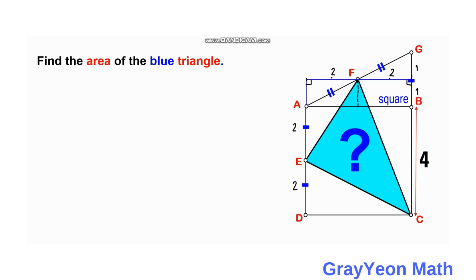This side is already 4, and this side is 4, since this is a square. So for this first method, we have this newly formed quadrilateral or rectangle HICD. We are going to get that area and deduct the areas of these 3 triangles: AHFE, FIC, and ADC.